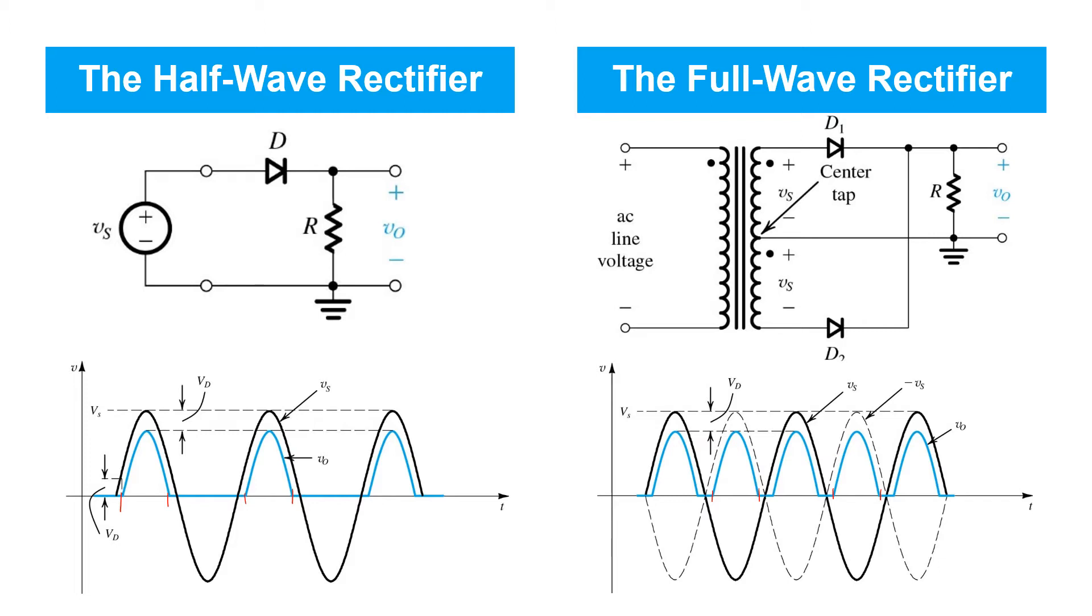The drawback is, first of all, we need a second diode, D2, but perhaps more importantly, the transformer required has to generate both the positive and negative half-cycles.